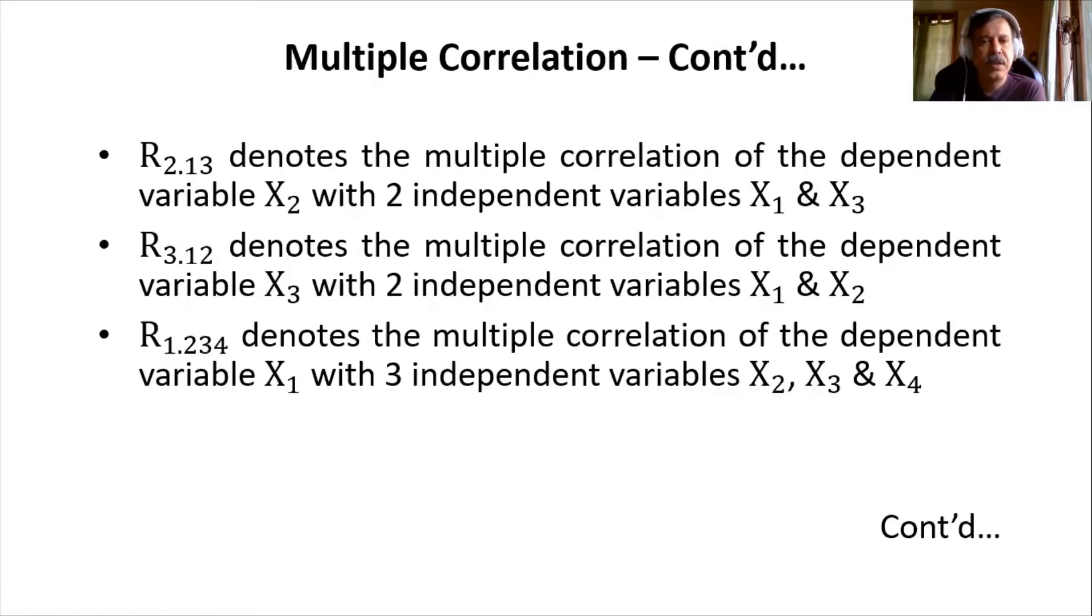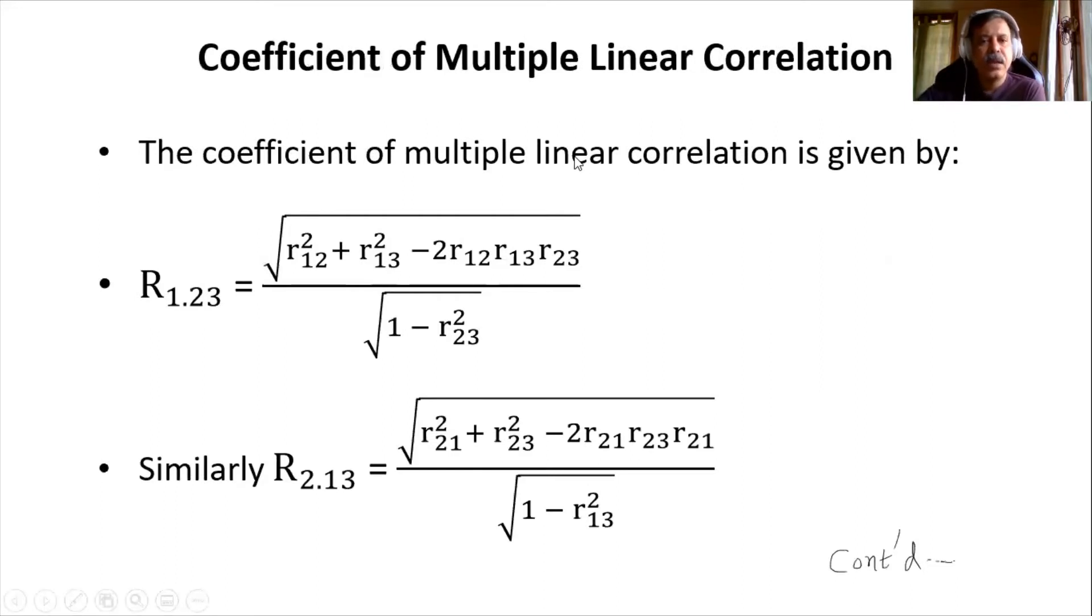So now, what is the formula for all this? The coefficient of multiple linear correlation is given by R1.23 equals—both numerator and denominator will have a square root in it, which clearly indicates that this capital R cannot take any negative values.